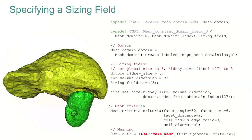Here we would like to generate a mesh from surfaces extracted from a 3D image. We start by defining the general sizing field — 8 in this case — and then add specific requests for the kidney, set to a value of 3. Then, as before, we set our criteria and ask the function to generate the mesh from the domain and criteria.